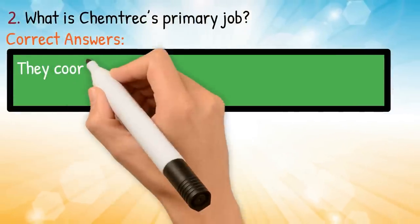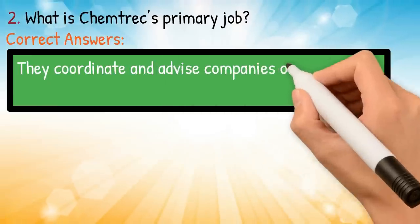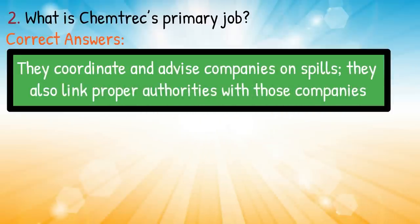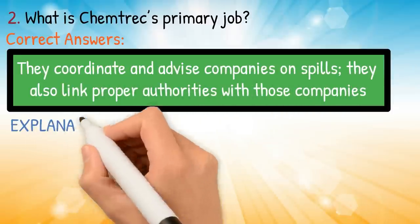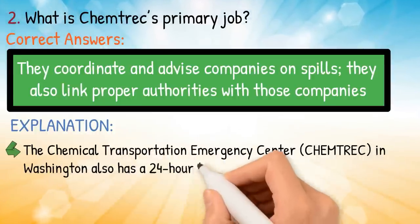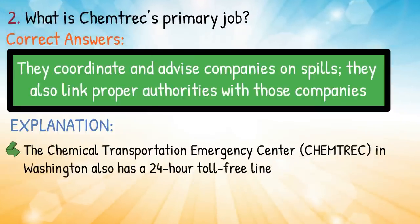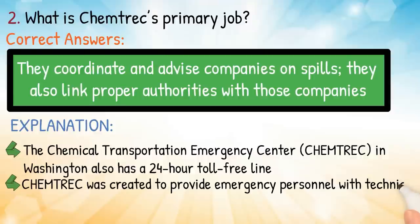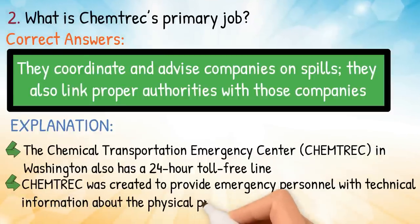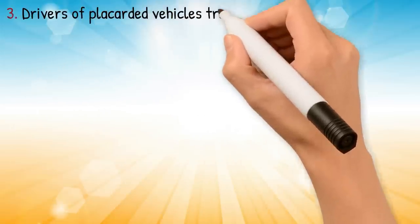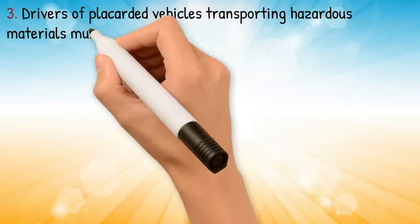Correct answer: they coordinate and advise companies on spills, and also link proper authorities with those companies. Explanation: the Chemical Transportation Emergency Center, CHEMTREC, in Washington also has a 24-hour toll-free line. CHEMTREC was created to provide emergency personnel with technical information about the physical properties of hazardous materials.